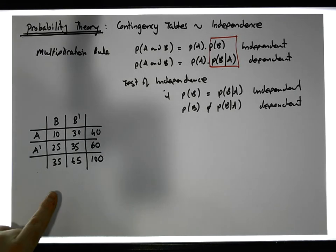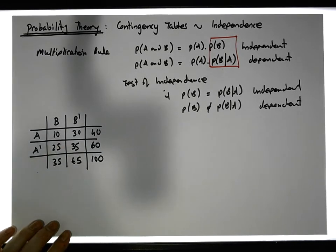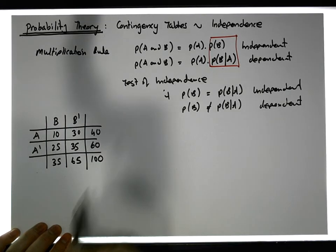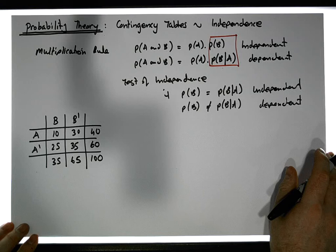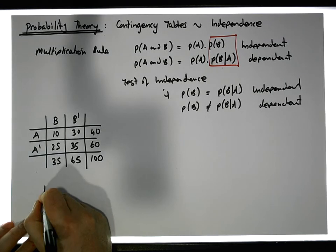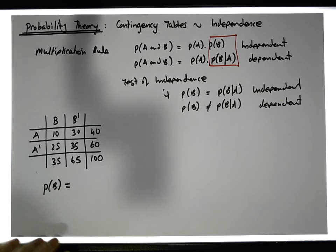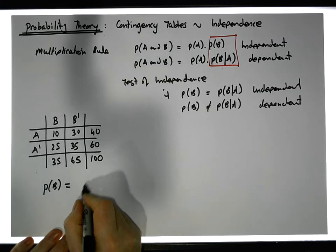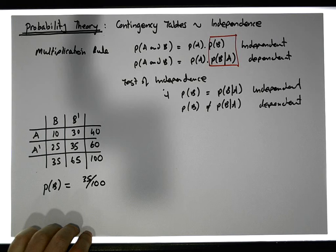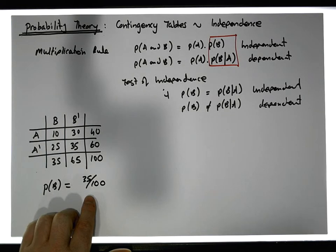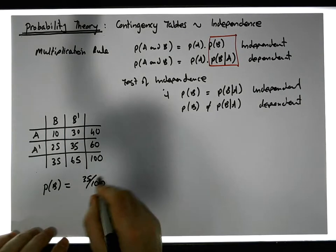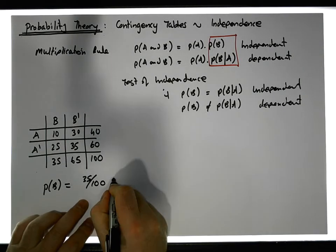Let's try to figure out some probabilities. Let's calculate the probability of B first. From this contingency table, the probability of B is simply equal to how many people purchased product B — there are 35 out of 100 — so it's equal to 35 out of 100. That's the probability of randomly selecting a person who purchased product B.